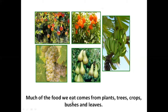Much of the food we eat comes from plants — trees, crops, bushes and leaves. The fruits and vegetables which we eat come from various plants; it can be a tree, a crop, bushes, or the leaf part of the plant. Repeat after me: much of the food we eat comes from plants, trees, crops, bushes and leaves.